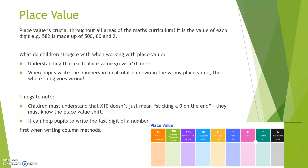The first thing to talk about is place value. This is an absolutely vital part of mathematics. If the children understand their place value exactly — they know their thousands, hundreds, tens, ones, and all the other place values — and they know exactly how this links to everything, then they're really going to make progress in maths.